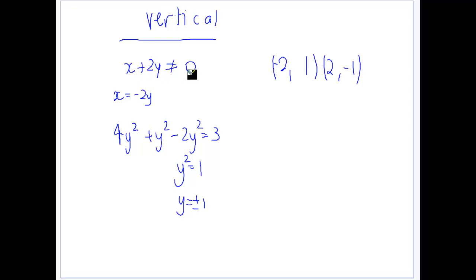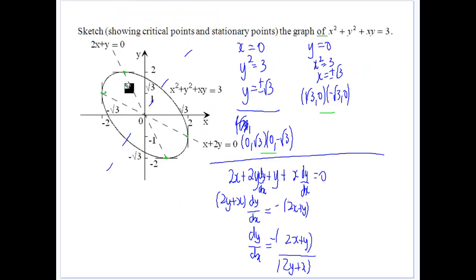For vertical tangents, dy/dx is undefined when 2y plus x equals 0, i.e., x equals minus 2y. Substituting back gives plus or minus 1, leading to the points minus 2, 1 and 2, minus 1. So those are the points where we get our vertical tangents, and the points 1, minus 2 and minus 1, 2 for horizontal tangents.